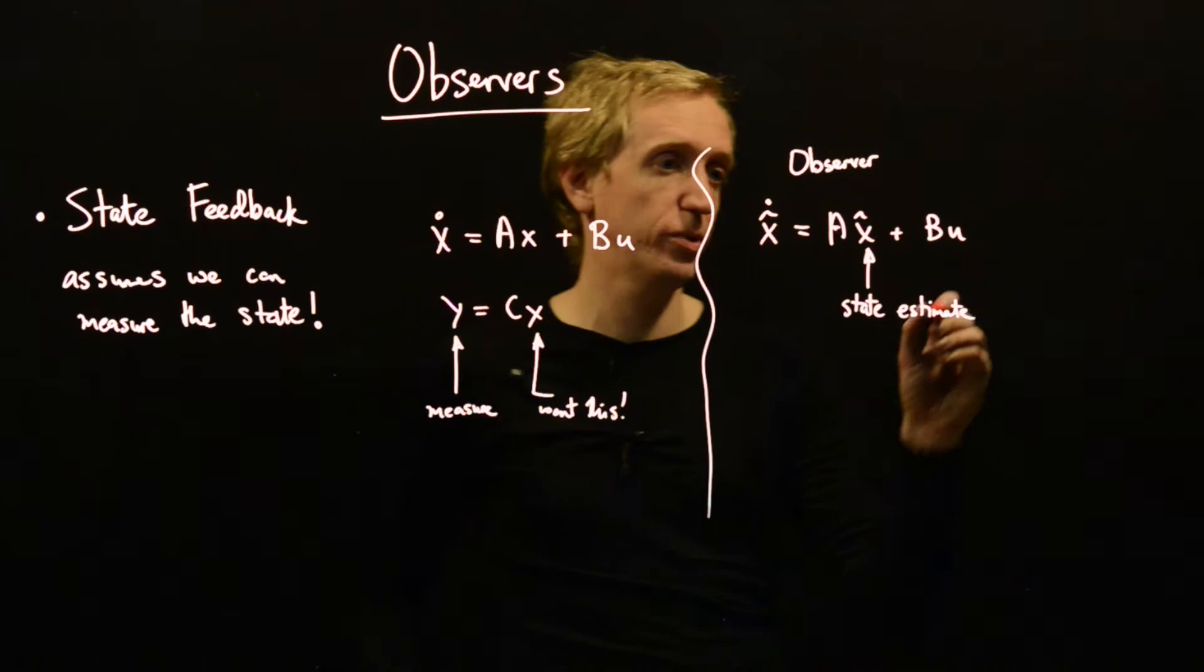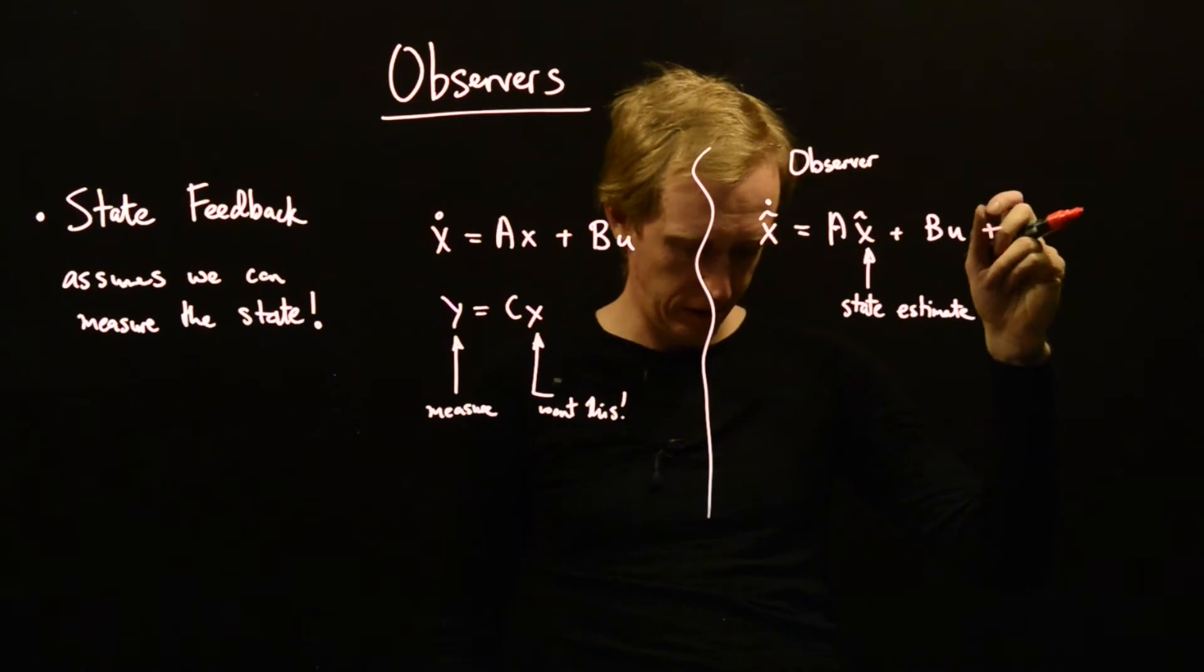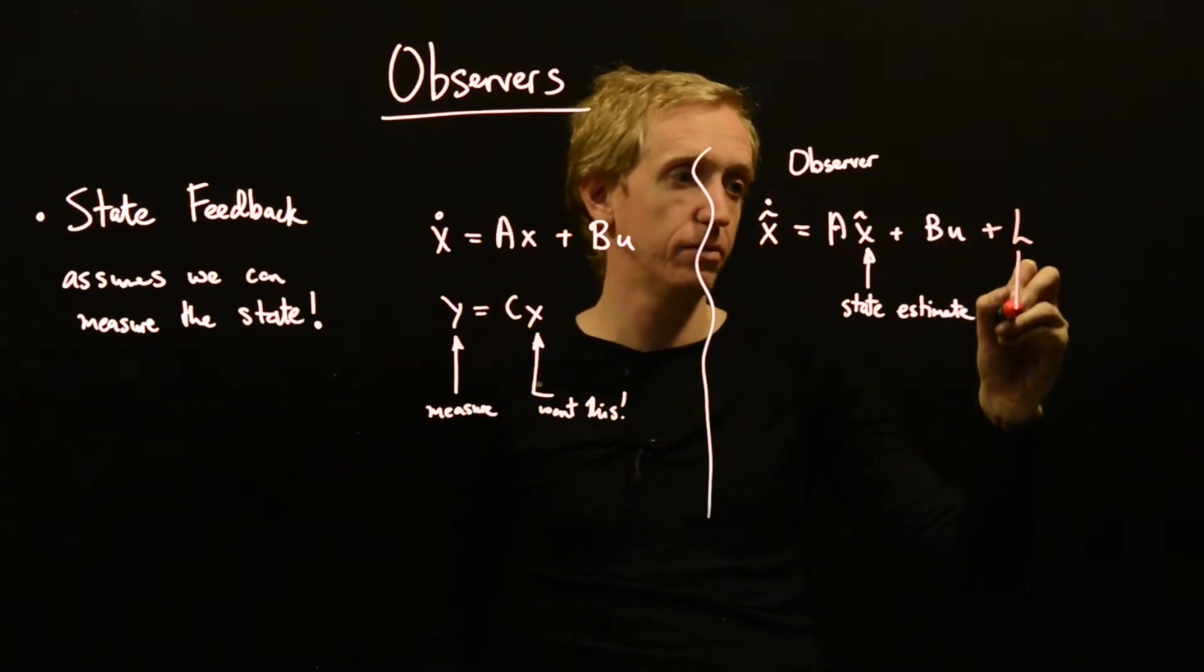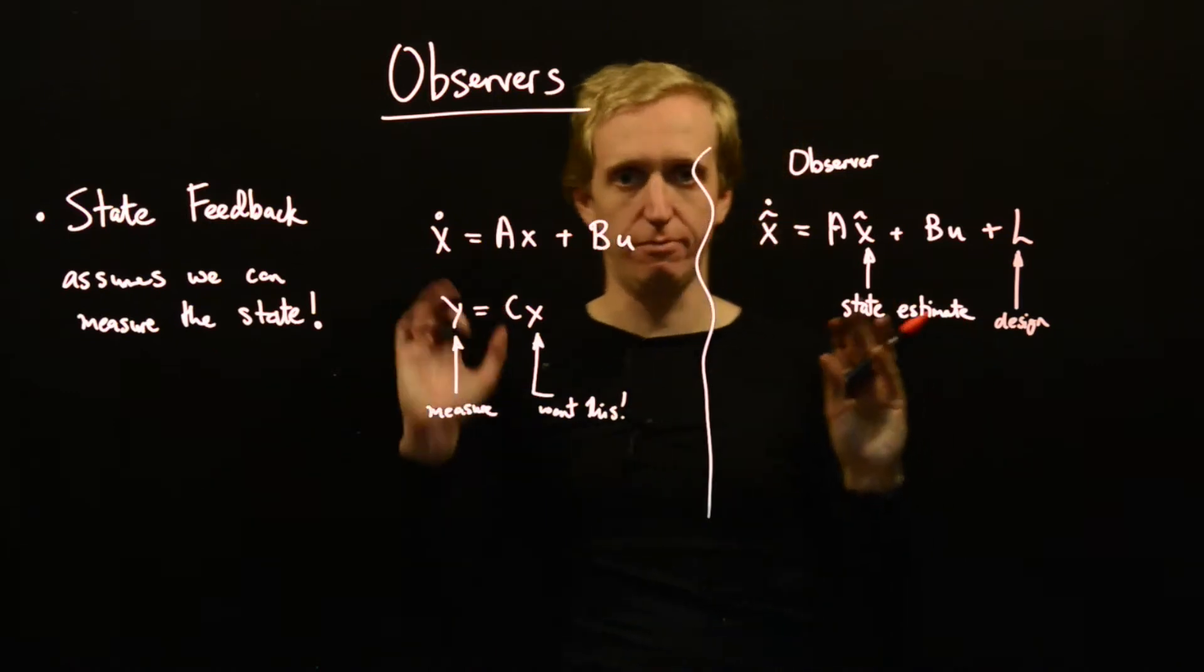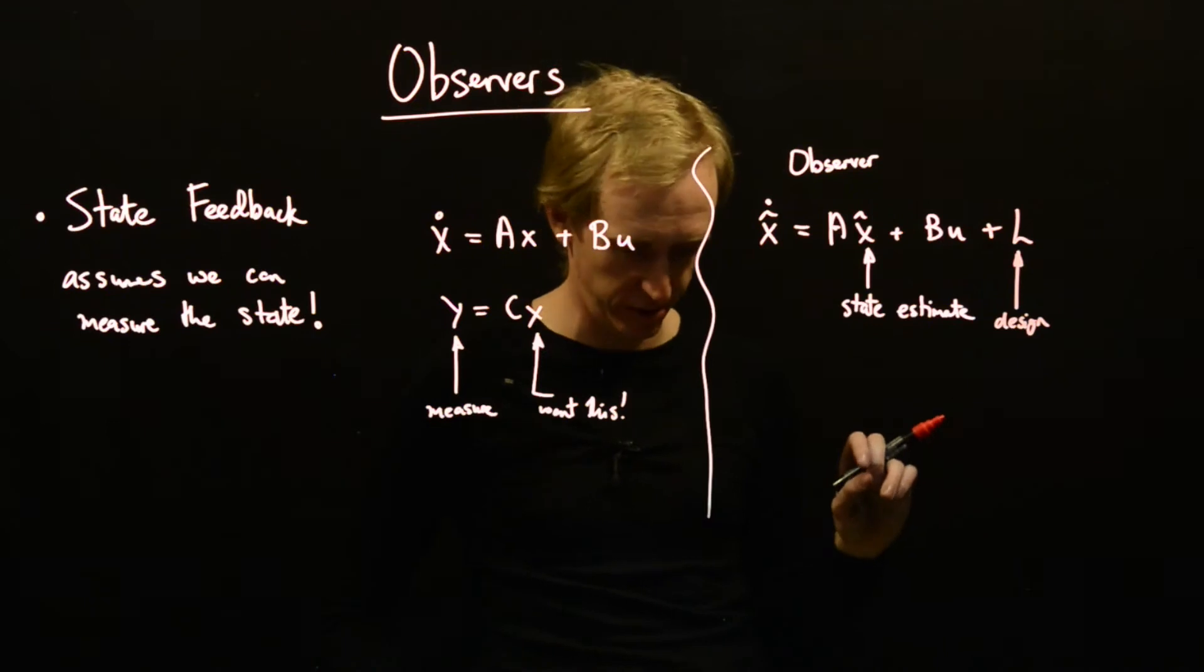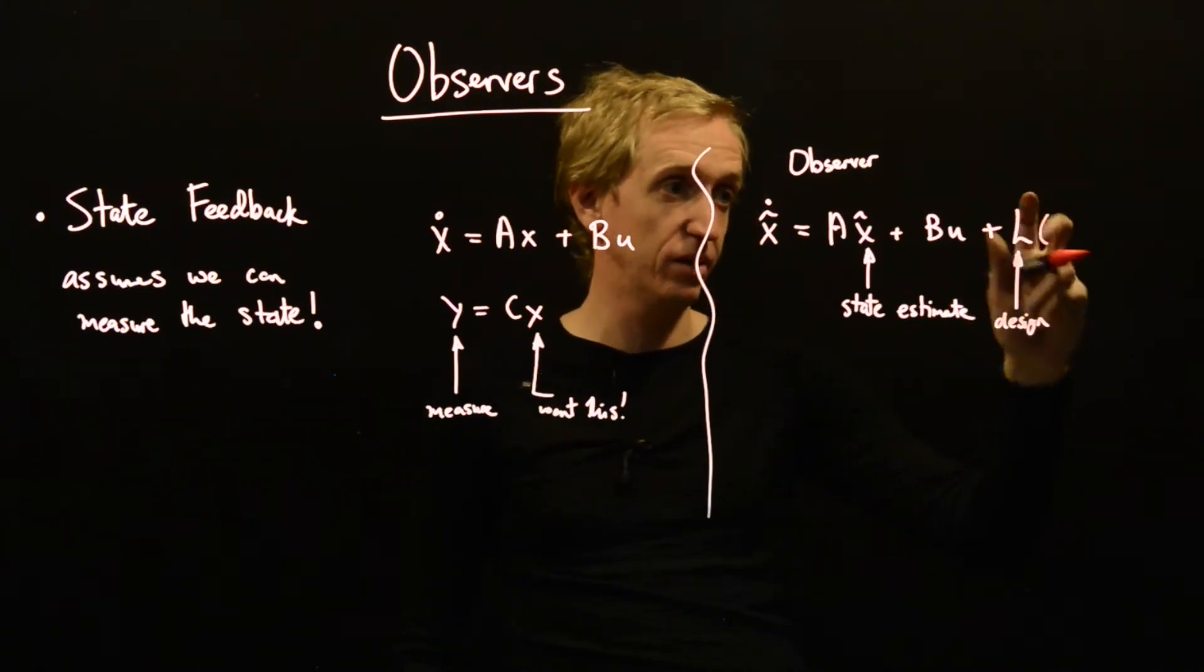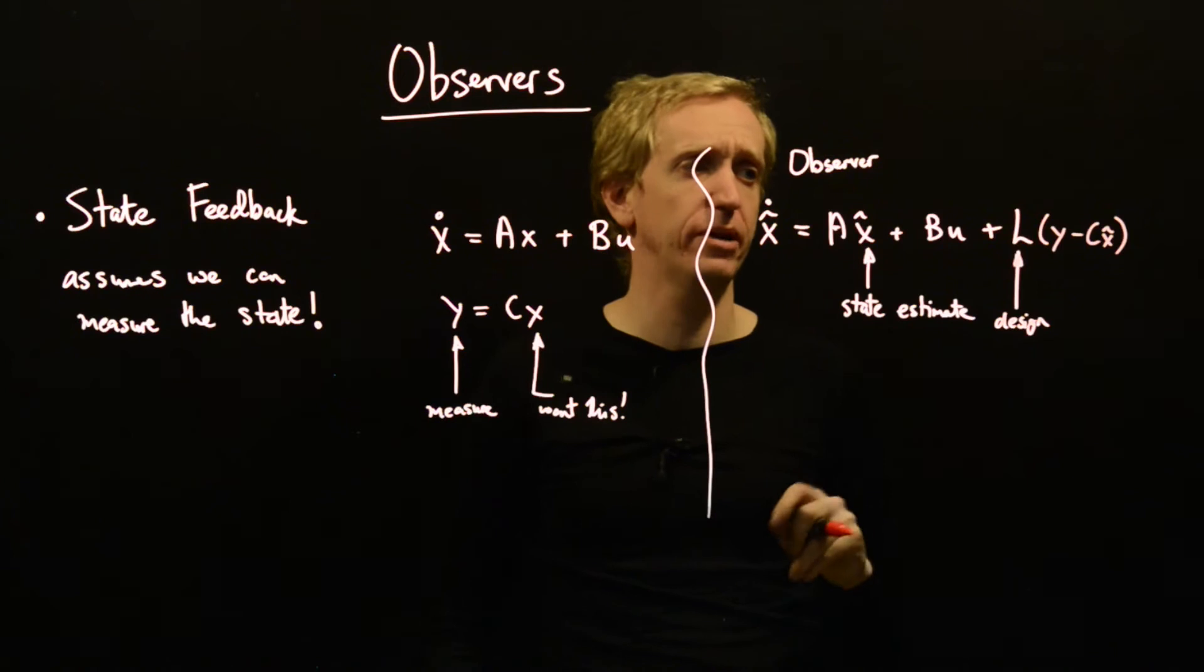So what we do is we add in a correction term. Here we have a matrix L that we're going to design. This will have been called K in the basic course, so apologies, I'm using world convention rather than Lund convention. This is our observer matrix. What signal is this going to act on? It's going to act on y minus C x hat.